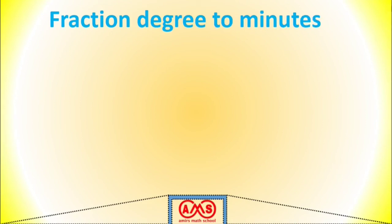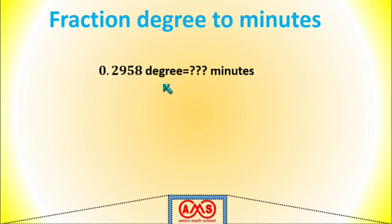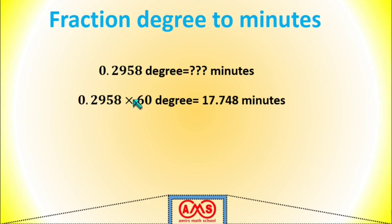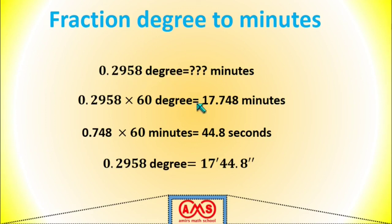Now let's see the fraction degree to minute conversion. 0.2958 degrees equals how many minutes? According to the rules, we know 1 degree is equal to 60 minutes. So 0.2958 degrees equals 0.2958 × 60 = 17.748 minutes approximately. Similarly, 0.748 minutes equals 0.748 × 60 ≈ 44.8 seconds. So 0.2958 degrees is equal to 17 minutes and 44.8 seconds. The rule is: multiply the fractional degree by 60 to convert to minutes, and multiply the fractional minute by 60 to convert to seconds.